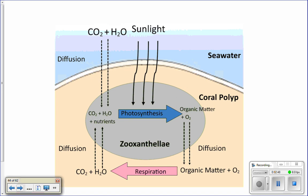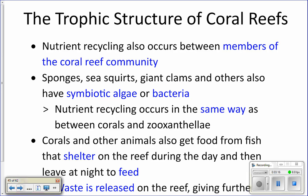Here's a picture to help illustrate that. Carbon dioxide, water, and nutrients are used by the zooxanthellae to do photosynthesis. They make sugar and oxygen and pass it to the coral. The coral does cellular respiration and makes what the zooxanthellae need to continue photosynthesis, passing those nutrients back and forth. Other members of the reef community also have symbiotic algae.